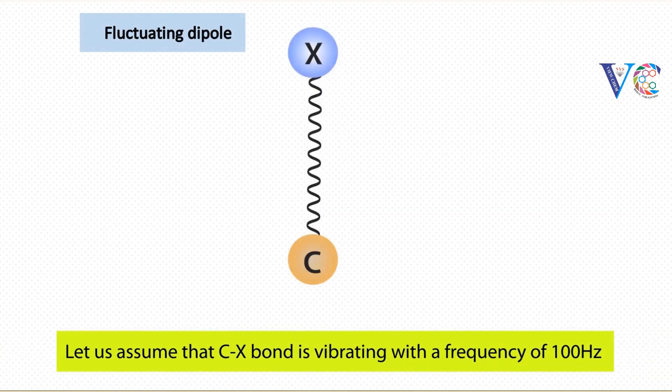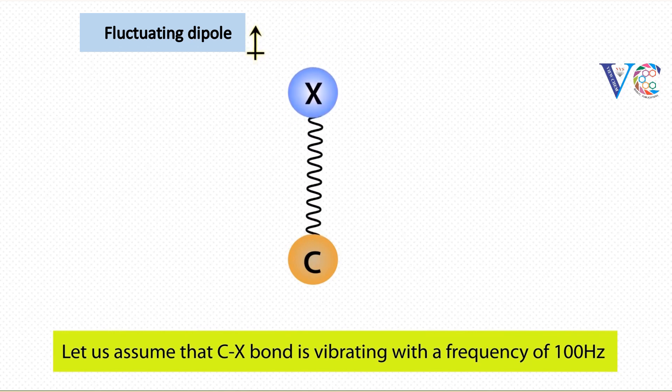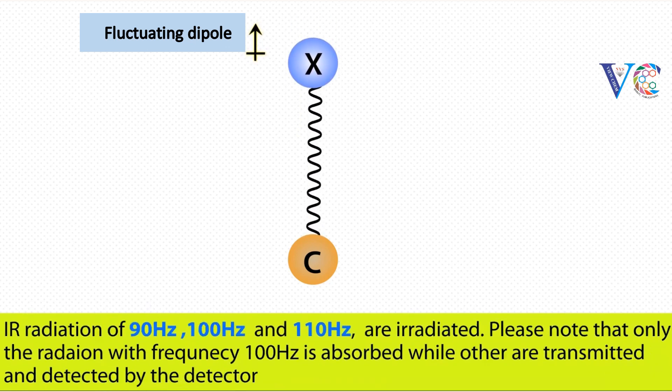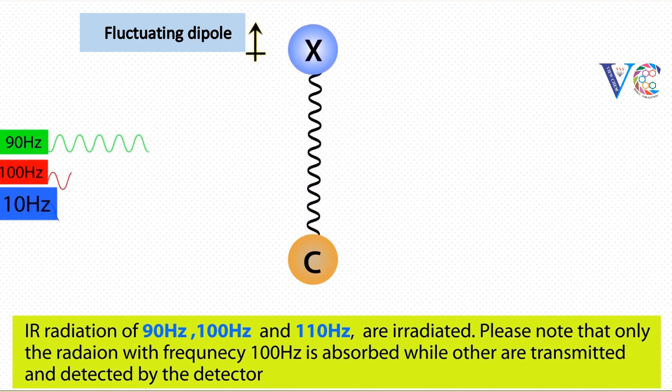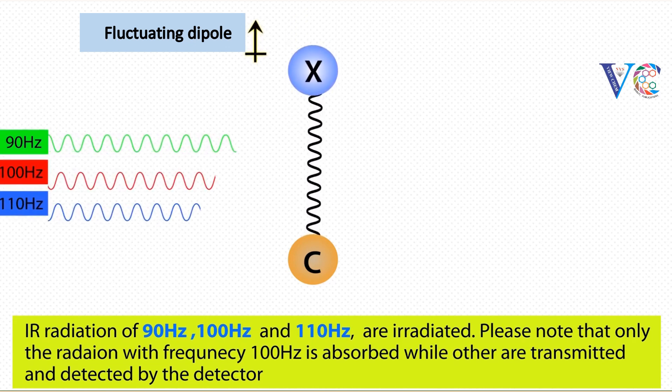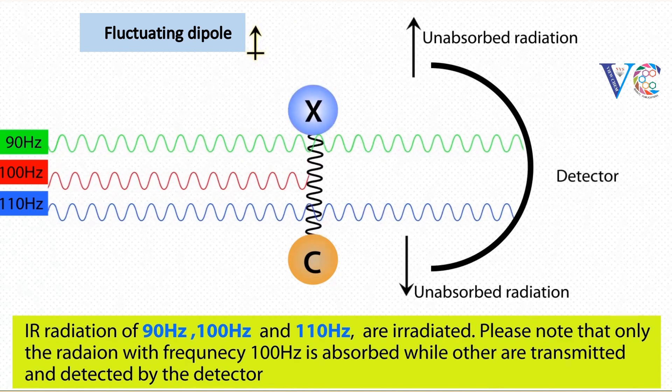For example, consider a functional group CX. Let us assume that the CX bond is vibrating with a frequency of 100 Hz. This means that the CX bond vibrates 100 times in a second. If we irradiate such a CX bond with radiations having frequencies of 90 Hz, 100 Hz, and 110 Hz, only the radiation having the frequency 100 Hz is absorbed, while the other radiations are transmitted.